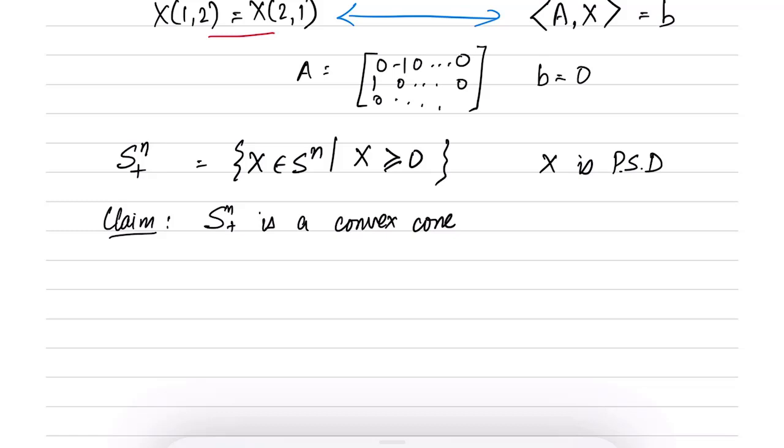So how do I prove it? Let us prove this claim. So in order to prove it is a convex cone, remember that we need to show that a convex conic combination theta1 X1 plus theta2 X2 belongs to this set. So let us assume that X1 belongs to S^n_+ and likewise X2 belongs to S^n_+.